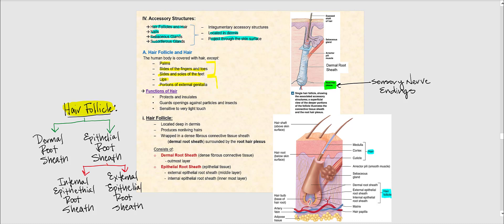Lips and portions of the external genitalia would be classified as thin skin. So what's the function of hair? It protects and insulates, and it guards openings against particles and insects. For example, our nose hair guards the opening leading into our nose, as well as hair that lines our external auditory meatus, or basically our ear canal, preventing particles and insects from making their way deeper into our ear. Hair is also extremely sensitive to very light touch, which I'll explain in a moment.